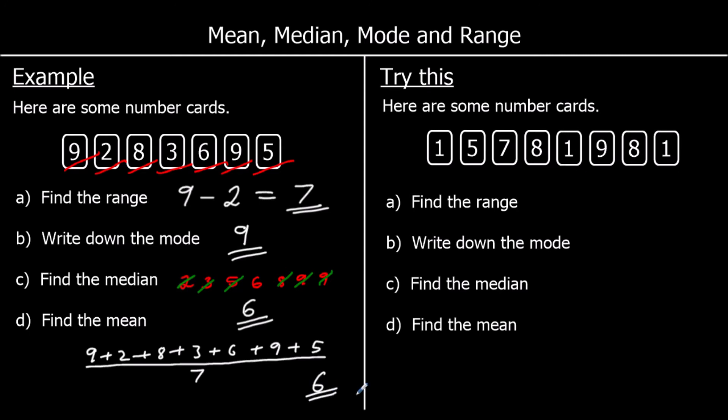So the range is the biggest number take away the smallest number. The mode is the one that appears most times. The median is the middle number. And the mean is when you add up all the numbers and divide by how many there are. Here's a question for you to try — give this one a go.